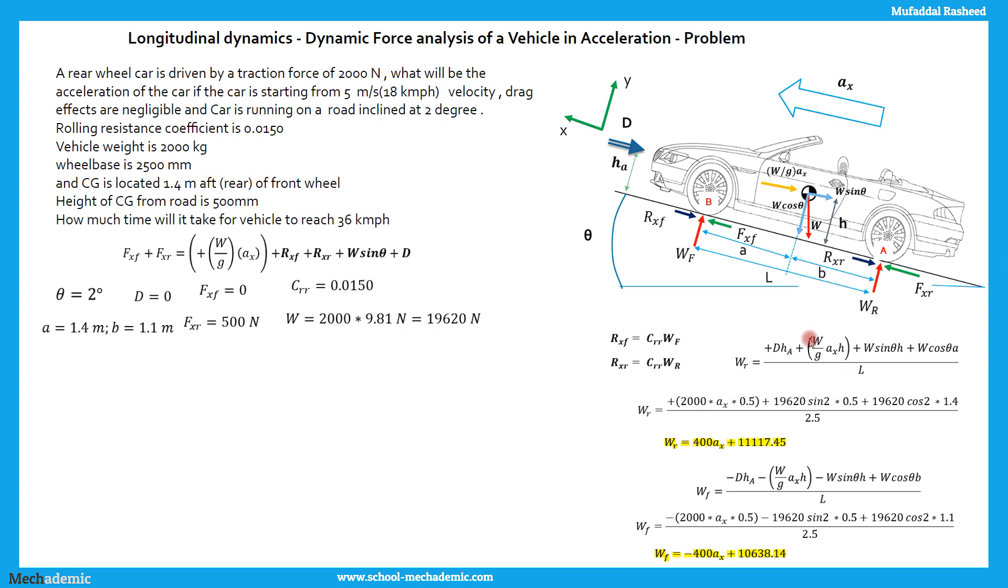Substituting the terms over here which are known. D is 0, HA is not considered here because the whole term becomes 0. W is known, G is known, Ax has to be found out. H is known which is 0.5, 500 mm. W is known, H again is known, W cos theta A divided by L. L is the wheelbase.